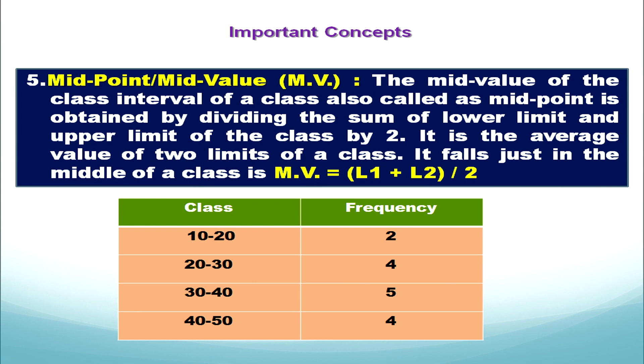For example, for the class 10 to 20, lower limit is 10 and upper limit is 20. Adding both: 10 plus 20 equals 30, then 30 divided by 2 gives midvalue 15. For the next class 20 to 30, 20 plus 30 equals 50, and 50 divided by 2 gives midvalue 25.